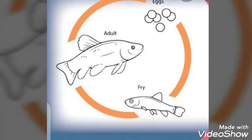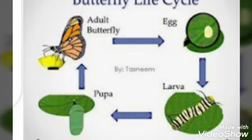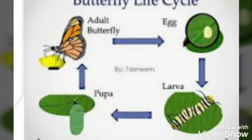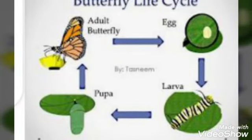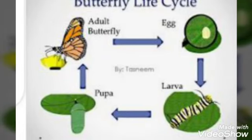Now we will discuss the Life Cycle of a Butterfly. There are different stages in the life cycle of a butterfly, as you can see in this picture. The first stage is laying eggs. Butterflies lay eggs, and then they turn into a caterpillar, then a pupa, and finally into an adult butterfly.